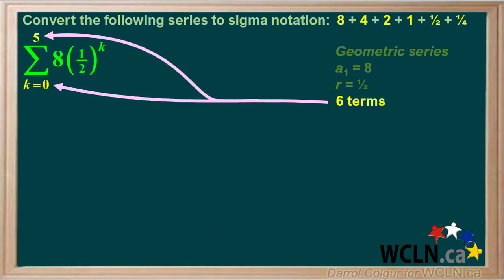Because there are six terms in this series, we know that k can have six possible values, ranging from 0 to positive 5.